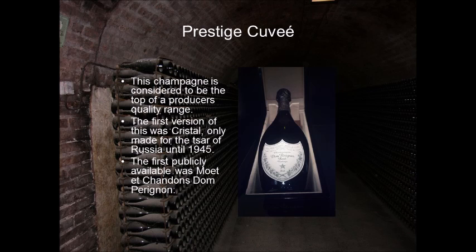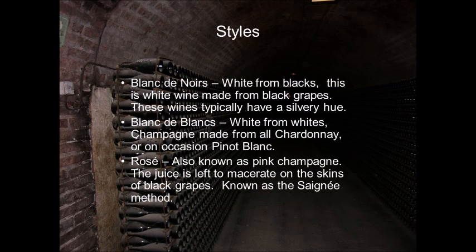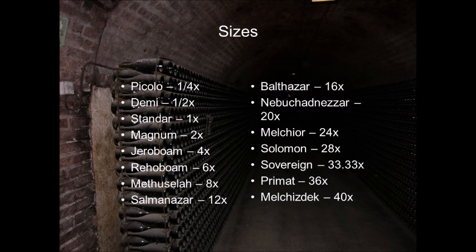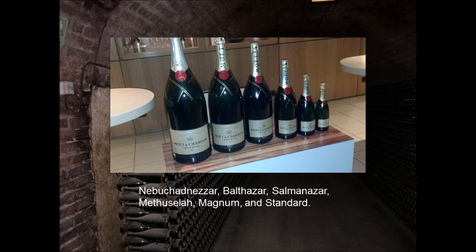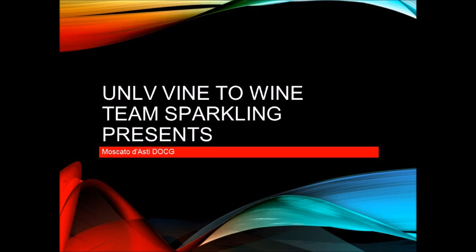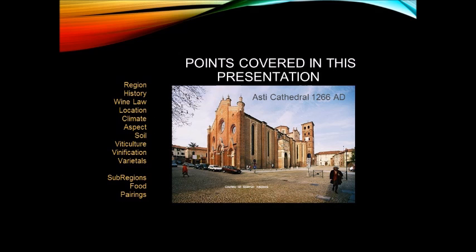Chianti: largest region in Tuscany. Two DOCGs — Chianti Classico and Chianti Superiore. Classico has 7 sub-regions: Colli Fiorentini, Colli Aretini, Colli Pisane, Colli Senesi, Montespertoli, Montalbano, and Rufina. Original blends: Sangiovese, Canaiolo, and Malvasia. Dry tannins, medium body, cherry, and floral notes.